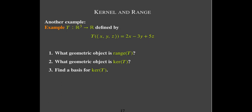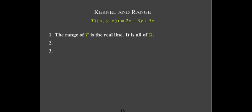In this example, the range of T is just the real line — every point on the real line is the image of some input vector. That's easy to see: just pick a real number, set y and z to zero, and set x equal to half that real number. You then have an input vector which gives you that real number.